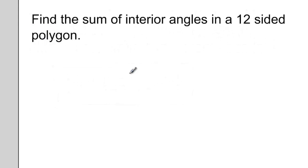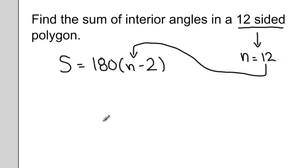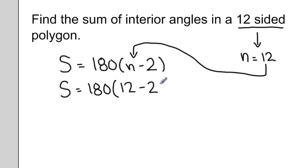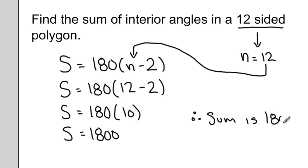Let's put it to use. Find the sum of interior angles in a 12-sided polygon. We need to use the formula you just created: 180 degrees multiplied by the number of sides minus 2. Here we are given a 12-sided shape, so our N value will be 12. We plug that into the equation: 180 degrees multiplied by 12 minus 2, which becomes 180 times 10. So a 12-sided shape has a sum of interior angles of 1,800 degrees.